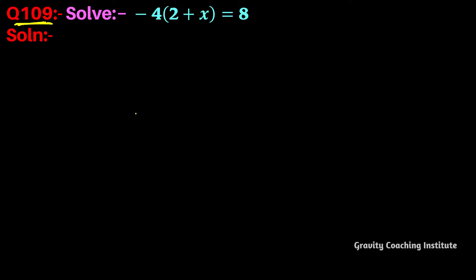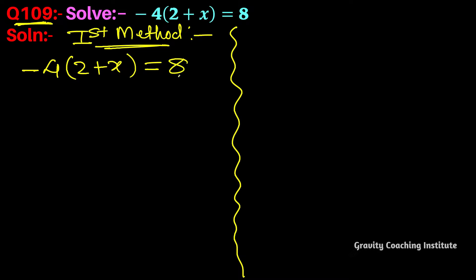Question number 109: Solve -4(2 + x) = 8. This question can be solved in two different ways. First method: -4(2 + x) = 8. The 4s cancel out.